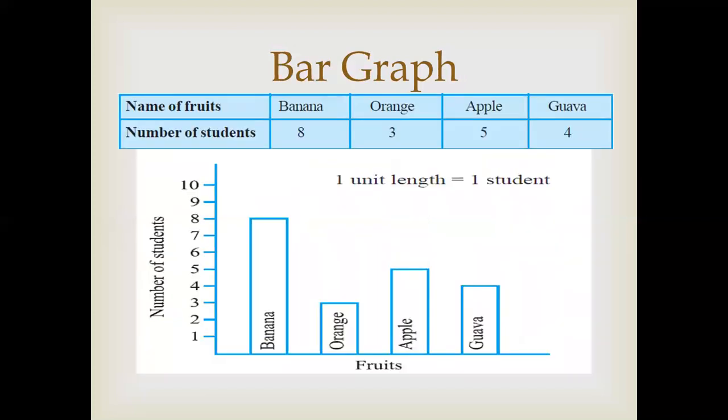Next form is graphical form, which we call it bar graph. Here the data is given to you. We will draw 2 lines: vertical and horizontal. On the vertical line we'll draw fruits, and on the horizontal line we'll draw number of fruits. Here we have drawn 4 vertical bars. Now bars should be of equal width. And the distance between each bar should be same.